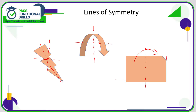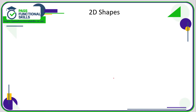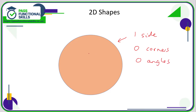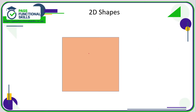With two-dimensional shapes like a circle, a circle has infinite lines of symmetry, but you'll never be asked that in a question. However, other circle properties are important: a circle has one side, zero corners, zero angles, and infinite lines of symmetry.